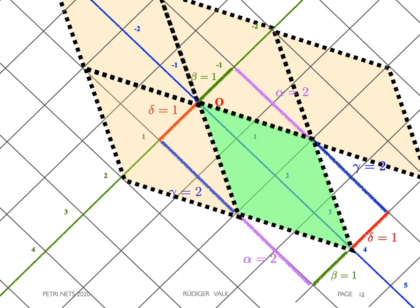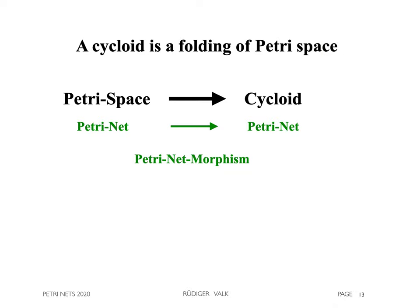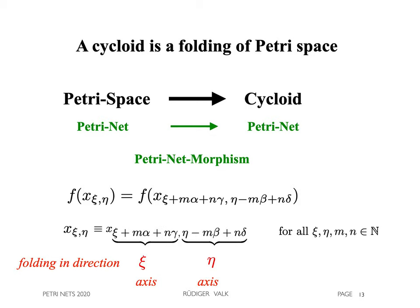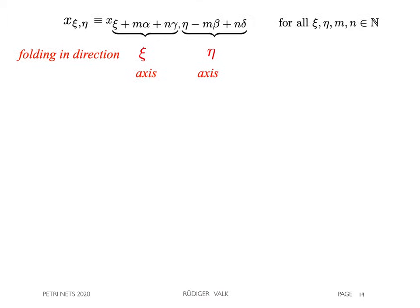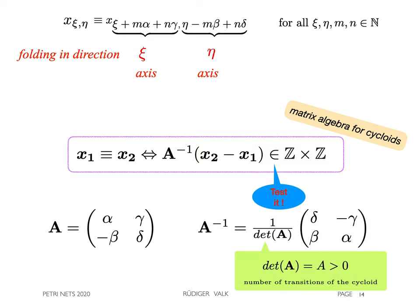All neighboring parallelograms of the same shape are folded together. This is formally done in a net folding from the Petrie space into the cycloid. It has the property to merge equivalent elements. The correspondence-equivalence relation is composed by a folding in direction of the xi-axis and the eta-axis. We found a more efficient and algebraic formalism to test equivalence, namely by checking that the application of the inverse of the matrix A has integer values. A is called the matrix of the cycloid. Its determinant is positive, as it equals the number of transitions of the cycloid.